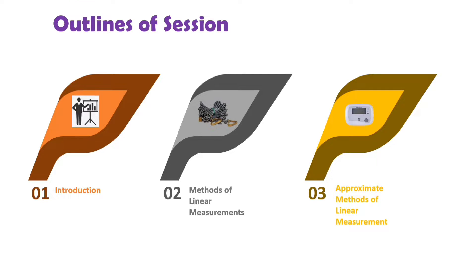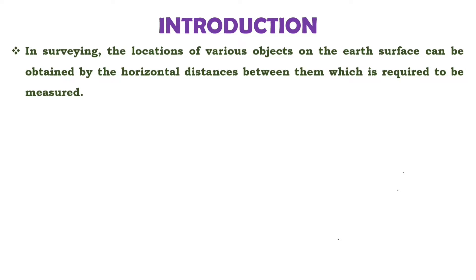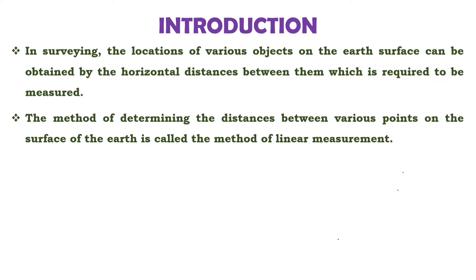Let us start with the first objective, that is, introduction of linear measurement. In surveying, the location of various objects on the surface of earth can be obtained by the horizontal distance between them, which is required to measure in the field. The method of determining the distance between various points on the surface of earth is called the method of linear measurement.